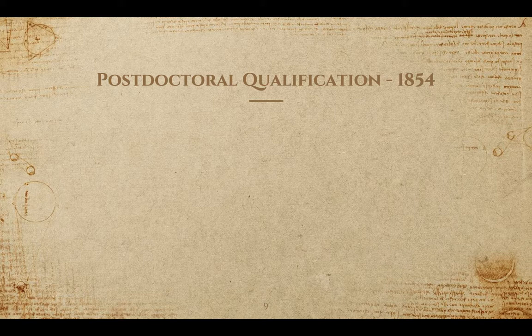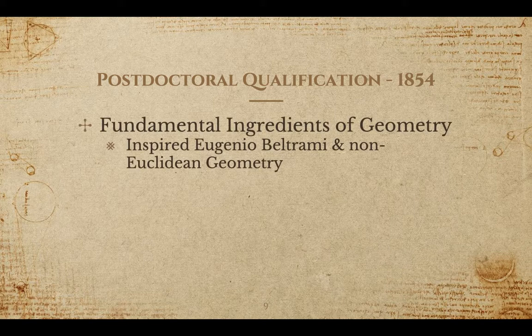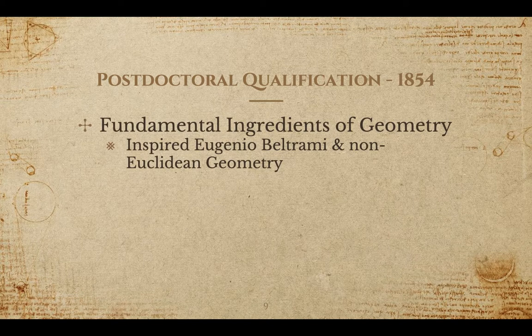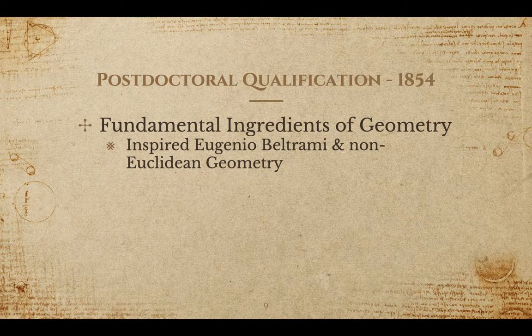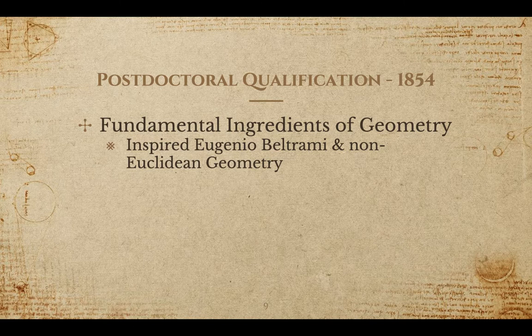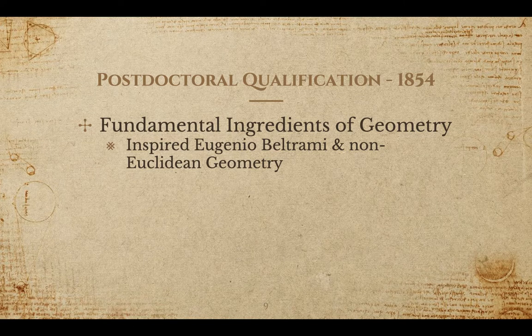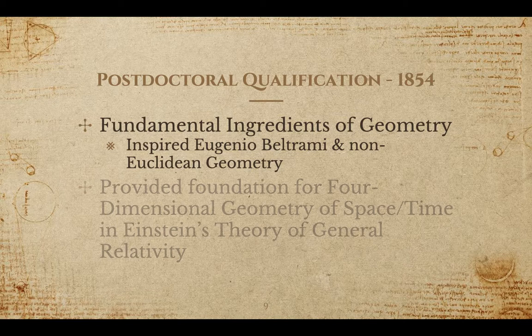In his postdoctoral qualification, Riemann argued that the fundamental ingredients for geometry are a space of points and a way of measuring distances along curves in the space. He stated that this space doesn't have to be normal Euclidean space, which inspired Eugenio Beltrami to work on non-Euclidean geometry.